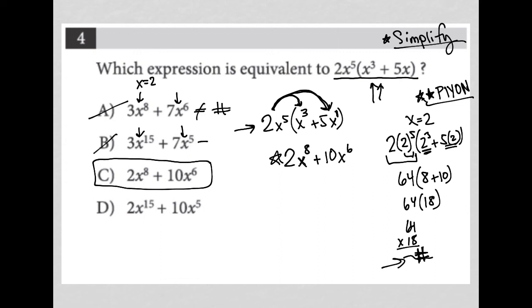When we try B, you'll also see that that does not give you the same number that we got when we plugged 2 into the original question. But C, for choice C, you will see that it gives you the exact same number. So that's how you use plug in your own number.